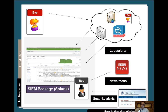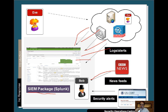In a security operations centre, we might run a SIEM package such as Splunk or HP ArcSight, gathering data from many devices on the network. We might also receive news feeds, security alerts from blogs, and from sites like CERT. If we see a new security alert, we might find traces of it happening within our logs.